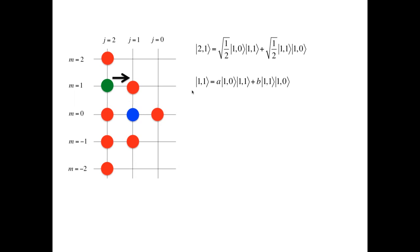We can write this new state as a linear combination of the same uncoupled basis as state |2,1⟩. The reason for that is that states |1,1⟩ and |2,1⟩ have one thing in common: M has the same value. Therefore, for both states, M1 plus M2 must be equal to 1.